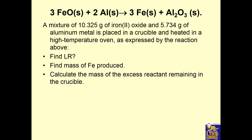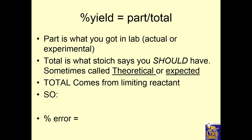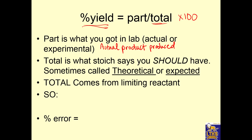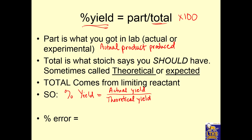We move on to a new concept using a lot of the same tools. The new concept is called percent yield. Any percent is always a part over total times 100. For percent yield, the part is the actual amount of product that you get in the lab. The total is a calculated amount from stoichiometry — sometimes called the theoretical or expected yield. The total has to come from the limiting reagent. Percent yield equals actual yield divided by theoretical yield, times 100.